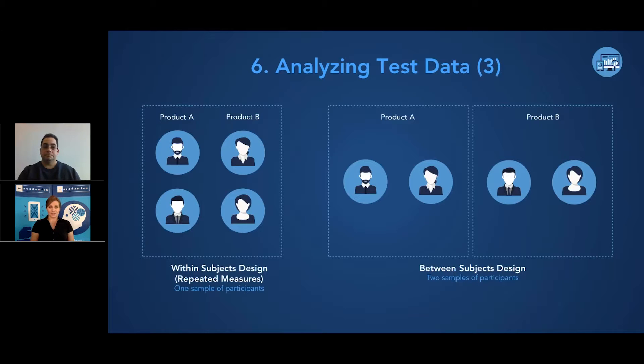For comparative usability tests, it's important to understand who's involved in your test to analyze your results. Here we've got two examples where participants can complete tasks on all products—that's the within subjects design on the left side of your screen—or different sets of users can work with each product, which is between subjects design. Keep in mind that the test design impacts the calculations that determine if the difference is statistically significant or not.